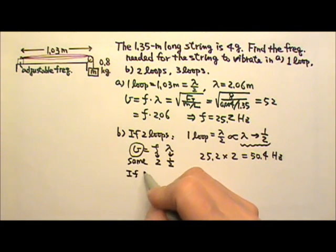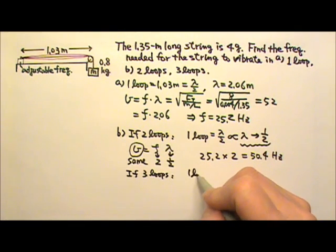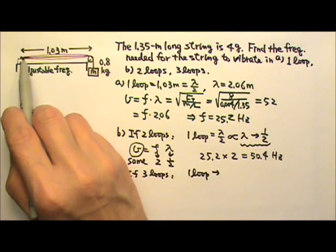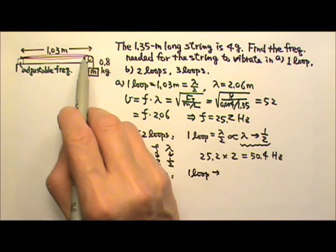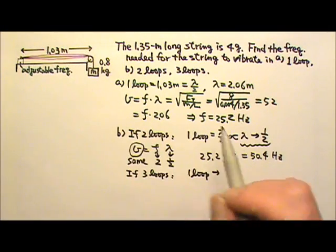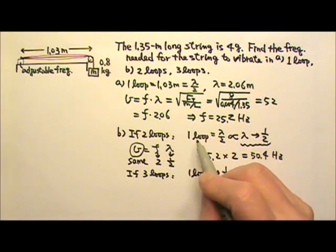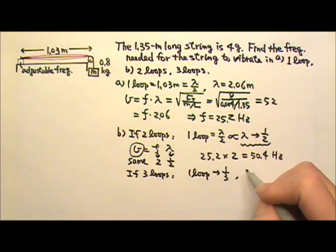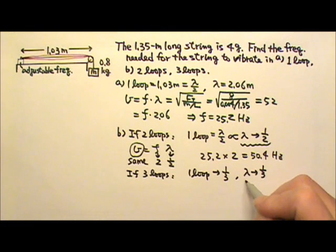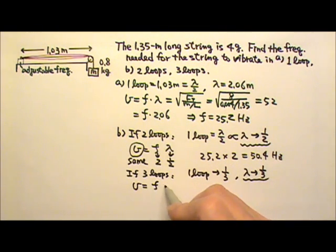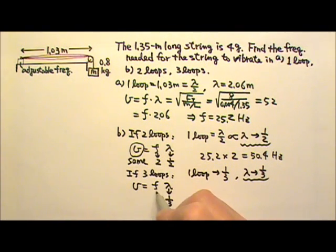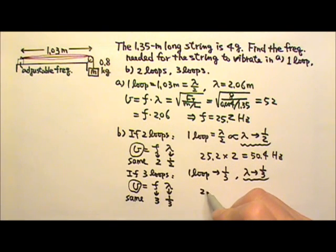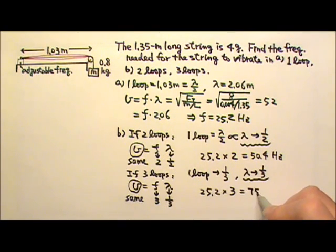For three loops, we must fit three loops into the same length, so the length of one loop changes by a factor of one-third. Since loop length is proportional to wavelength, the wavelength also changes by one-third. Speed equals frequency times wavelength, so if wavelength changes by one-third, frequency must triple to keep speed the same. That gives 25.2 times 3, which equals 75.6 hertz.